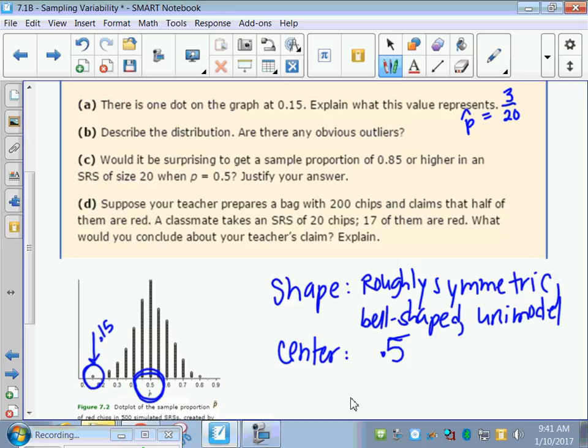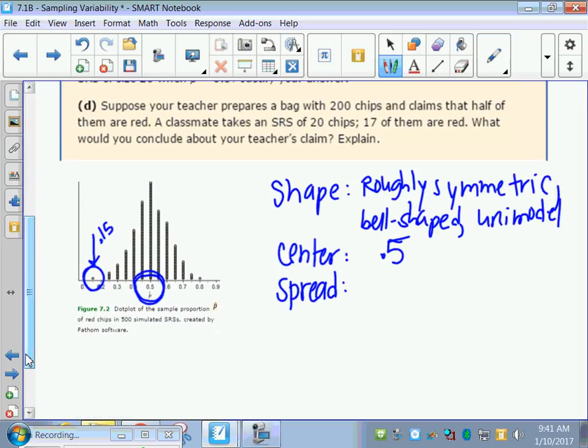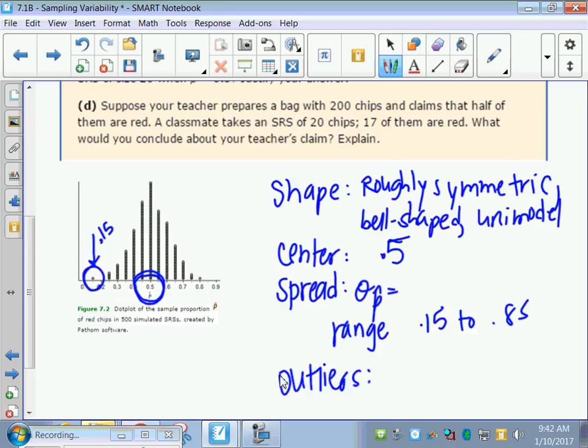And our spread, we could calculate it using the formula that we talked about. They also talk about range. Range is also spread. So our lowest value is 0.15. And then it goes up to 0.8-ish. So you can also talk about range when you're doing spread, from 0.15 to 0.85. Outliers. There is a possible outlier. 0.15 might be, kind of stands out as being low.